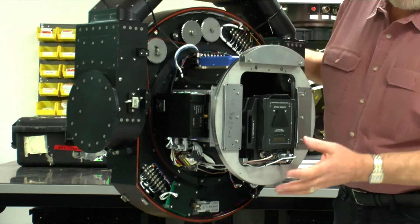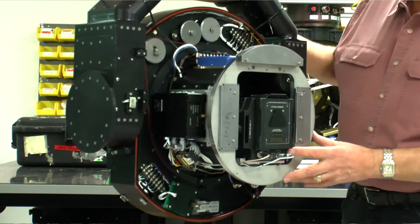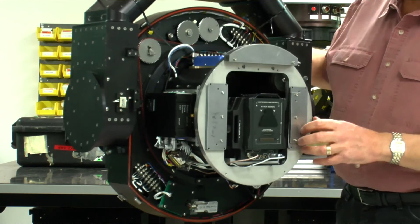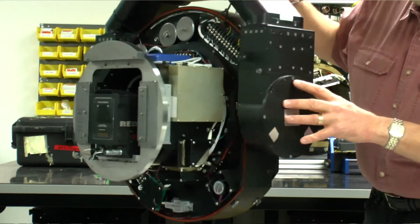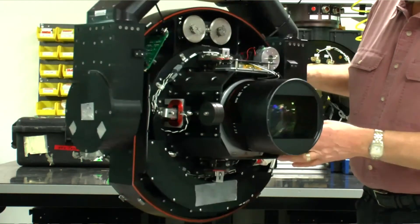And then we installed it in here with the Angenieux 24-290, which is a massive piece of glass. It goes clear back to here and it's 25 pounds of glass in here, and it is a beautiful lens.